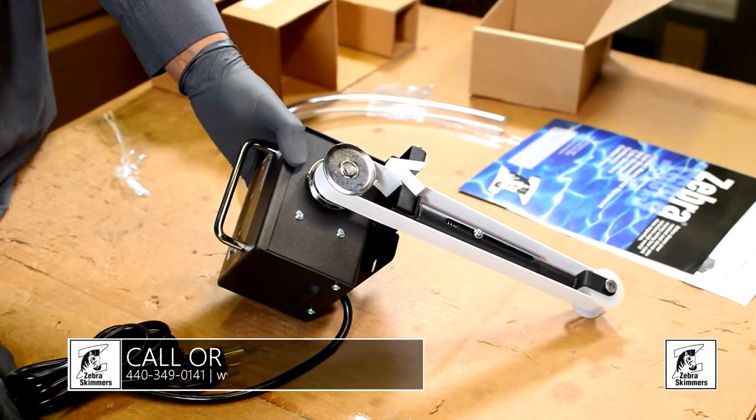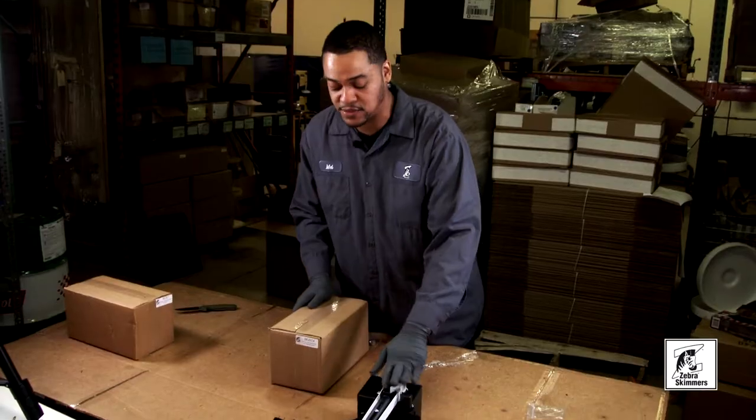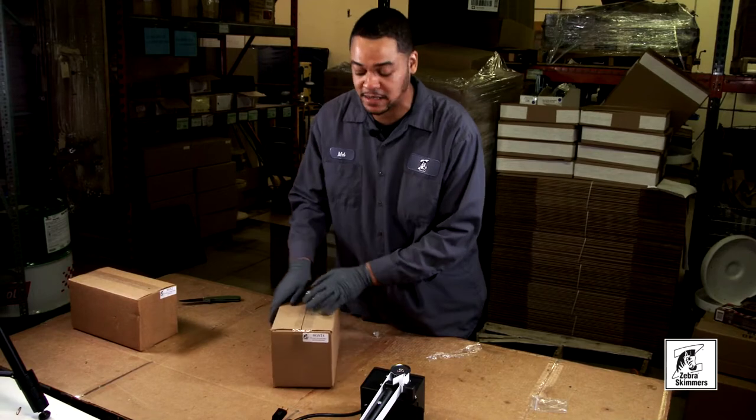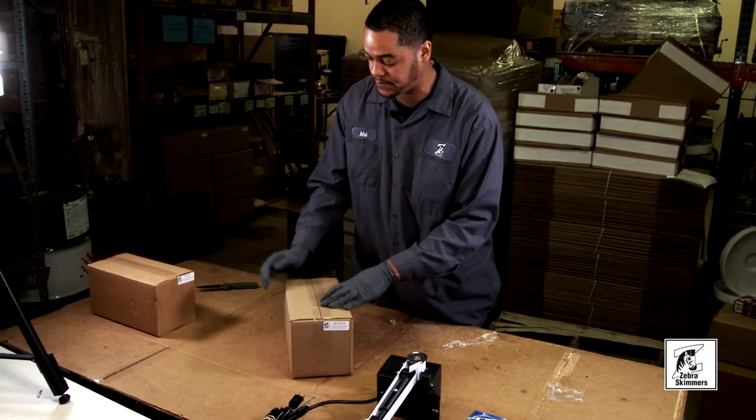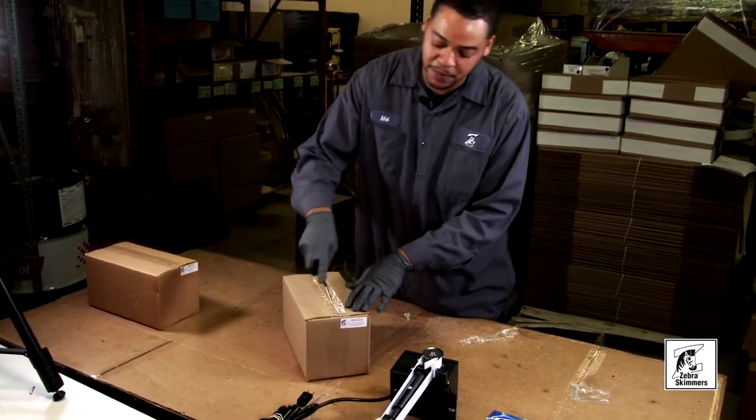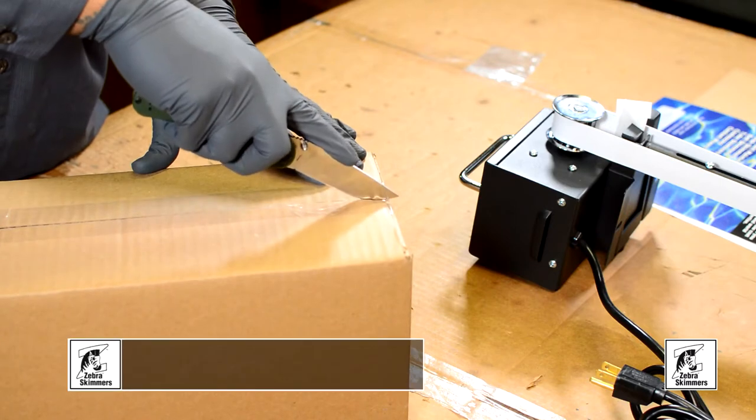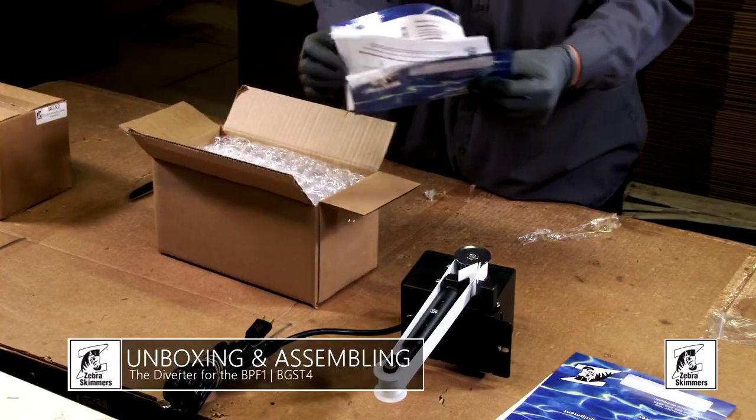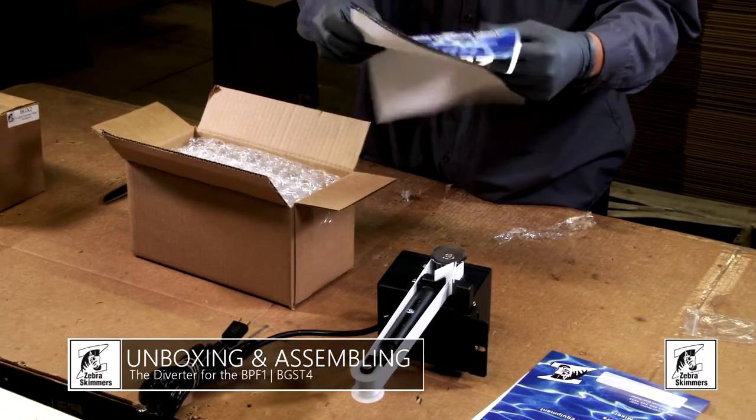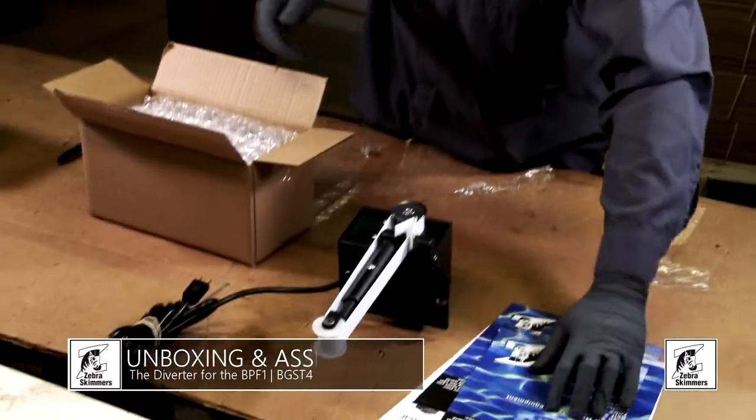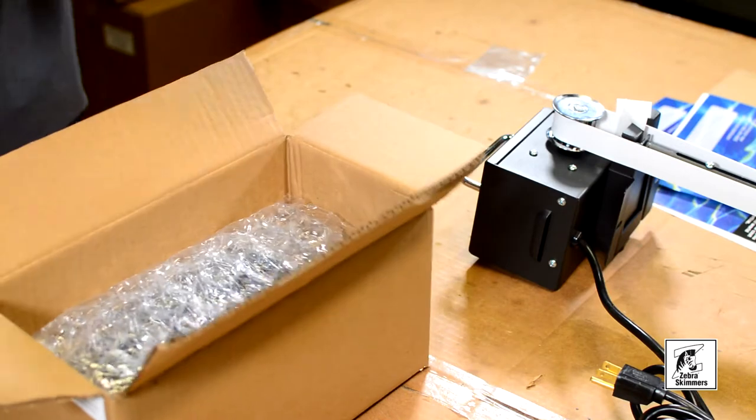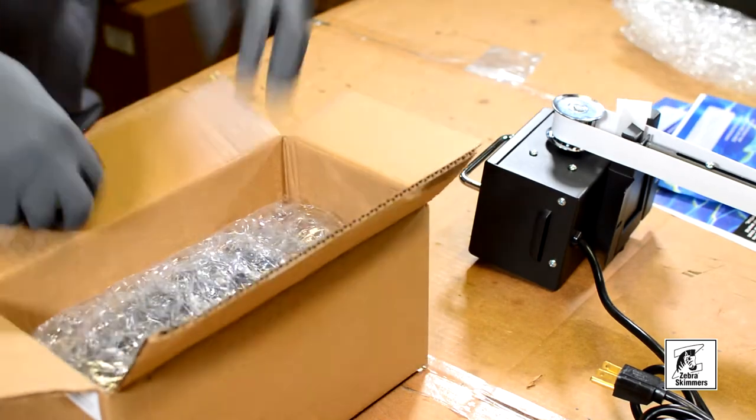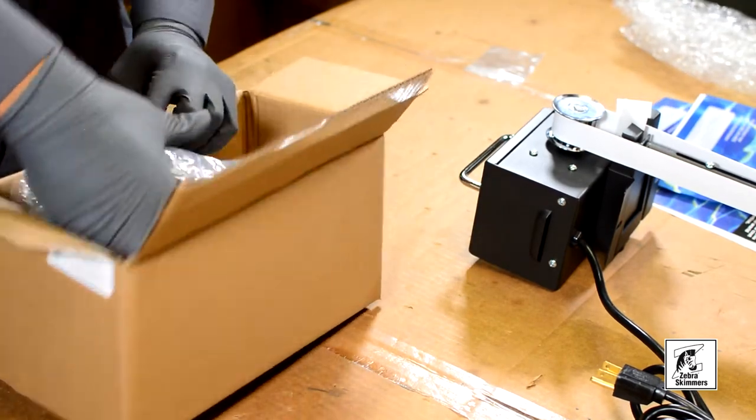Next, we have a sub-assembly for our BPS 108 called a diverter, which is a BGXT4. Let's open up the box, how it will be received from shipping. You have your paperwork on top. More bubble wrap will come out, and let's pull out the unit next.